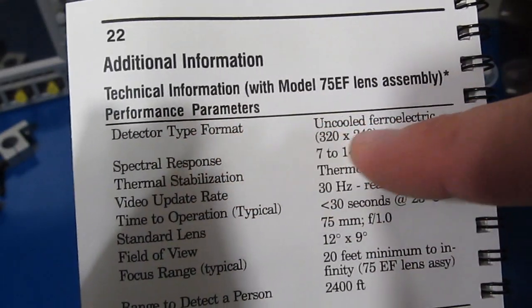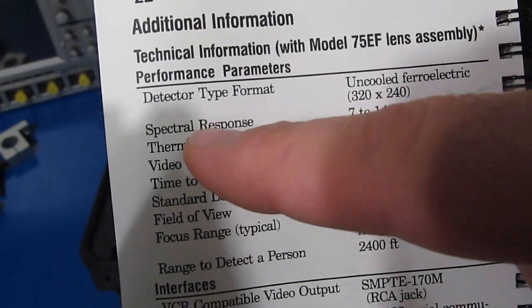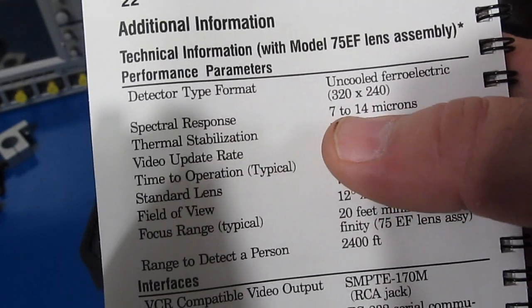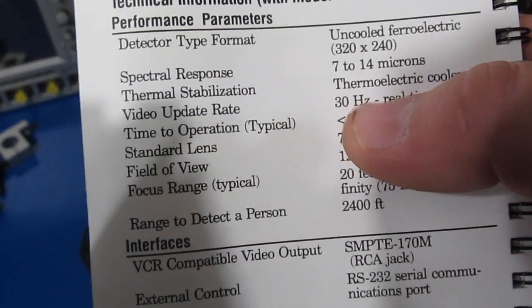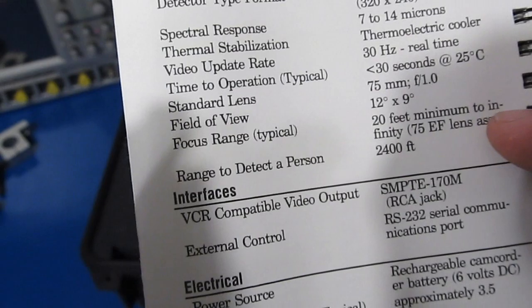The detector type format: uncooled ferroelectric 320x240 resolution. Spectral response is 7 to 14 microns. Video update rate is 30 hertz. Focal range is typically 20 feet minimum.